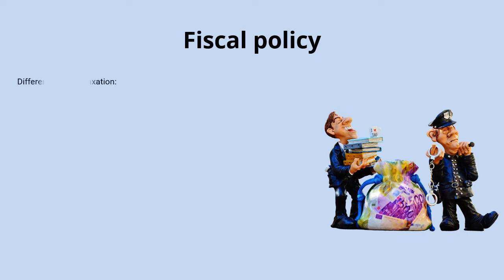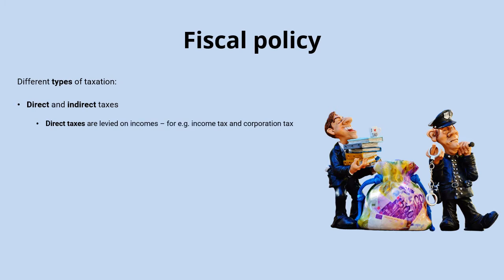First, we'll take a run through of the different types of taxes used as part of these fiscal policies. We make a clear distinction between direct and indirect taxes. Direct taxes are levied on incomes — so income tax on individual earnings and corporation tax on business profits are both examples. Indirect taxes are levied on expenditure, so VAT and excise duties are examples of this type of tax.